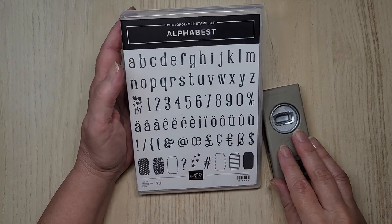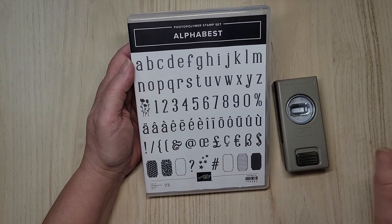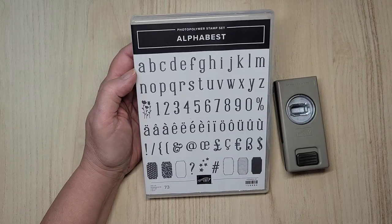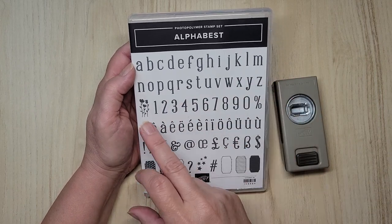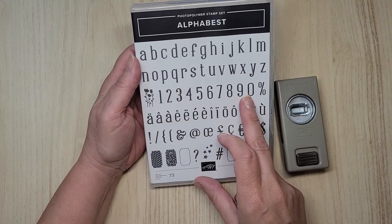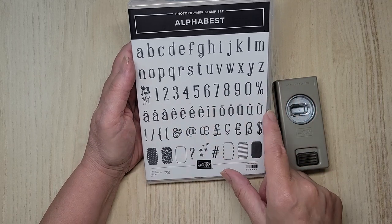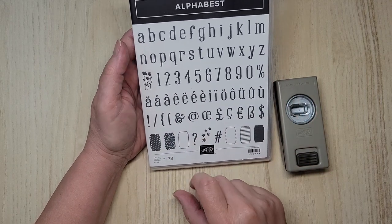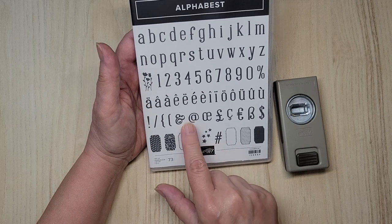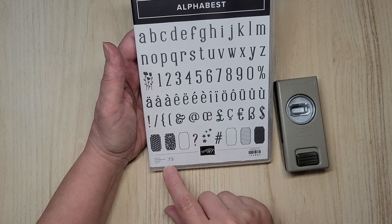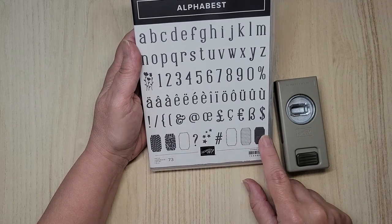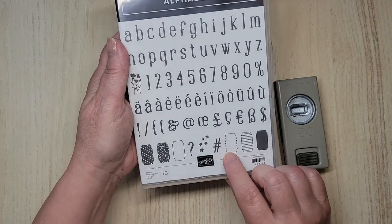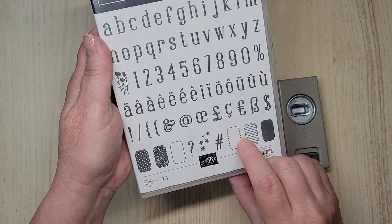What we have here is a photopolymer set which means it's clear and you've got the entire alphabet. You have numbers, characters, lots of characters, stars, flowers. There's the hashtag and the at sign and then these cute little pieces here. We're going to be using this one today. I love the little dotted line.